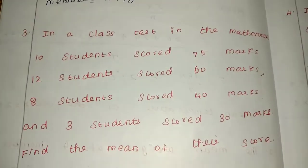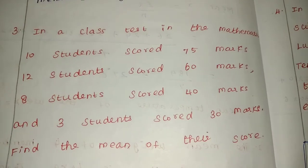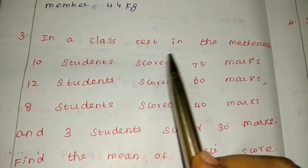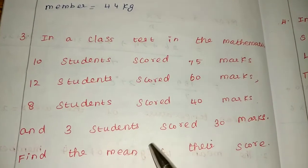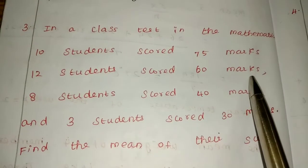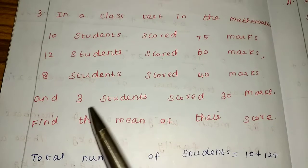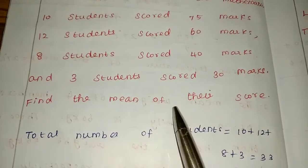Hello friends, I am Saranya. I'm going to solve 9th Standard Maths Chapter 8 Exercise 8.1 Third Question. In a class test in Mathematics, 10 students scored 75 marks, 12 students scored 60 marks, 8 students scored 40 marks, and 3 students scored 30 marks. Find the mean of their scores.